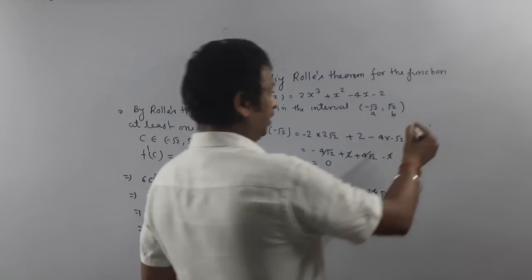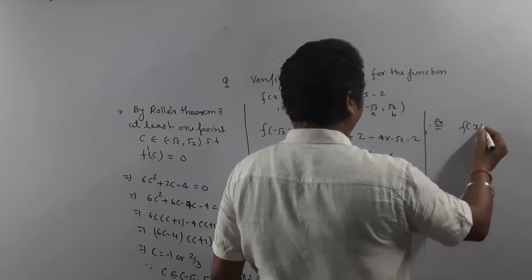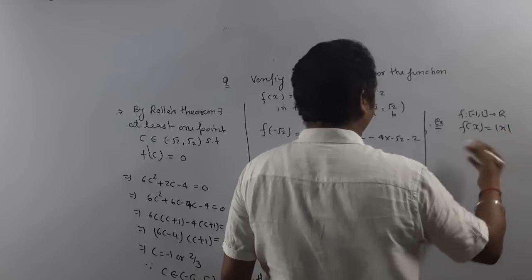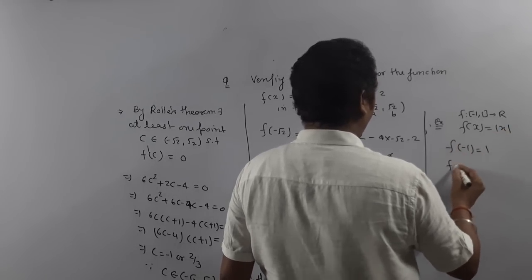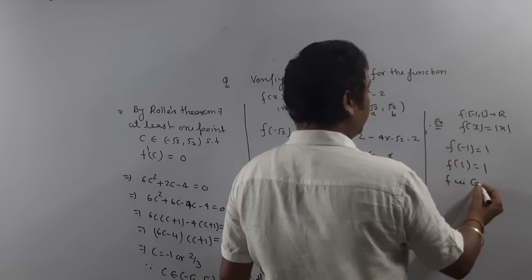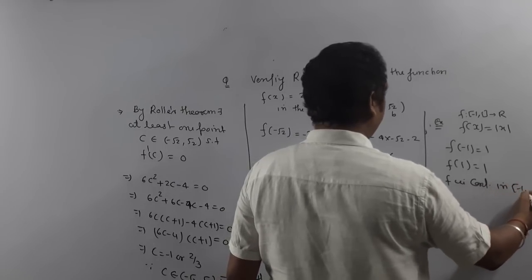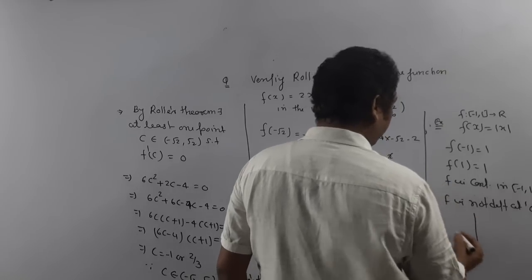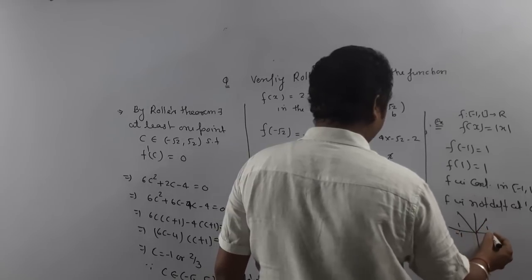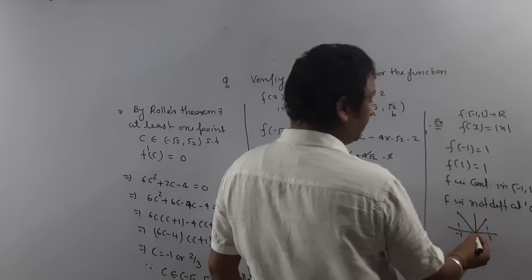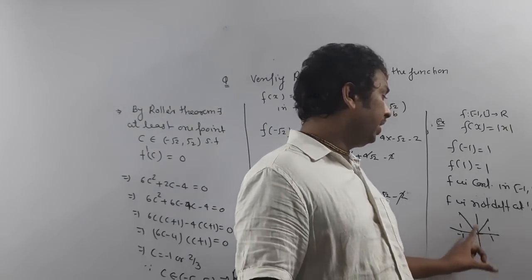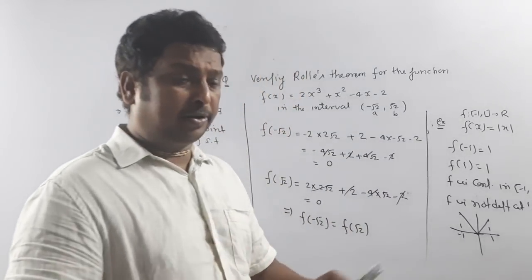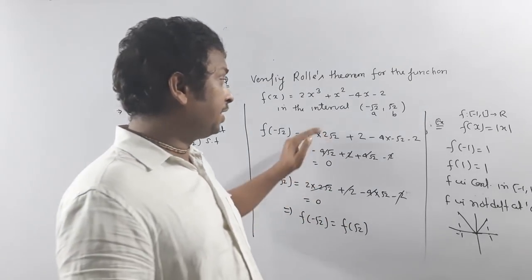Now I will give one example where Rolle's Theorem cannot be applied. Suppose f: [−1, 1] → R, f(x) = |x|. Here f(−1) = 1 and f(1) = 1, so the values are equal. f is continuous on [−1, 1] — yes. But f is not differentiable at 0, because the graph of |x| has a sharp edge at 0. Since f is not differentiable at 0 in the open interval (−1, 1), we cannot apply Rolle's Theorem here. To apply Rolle's Theorem, all three conditions must be satisfied.